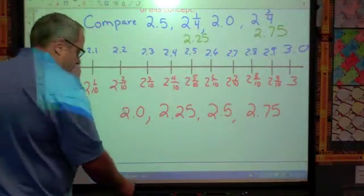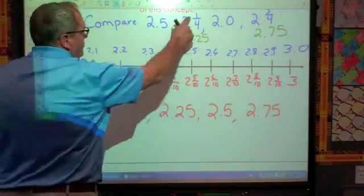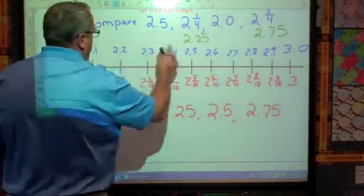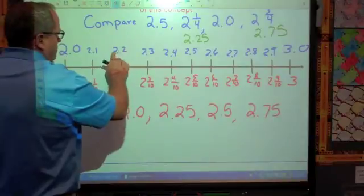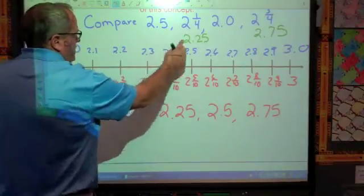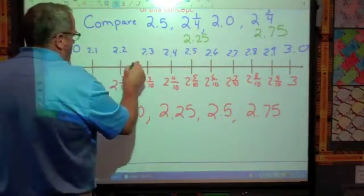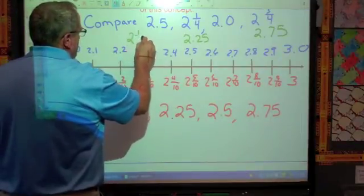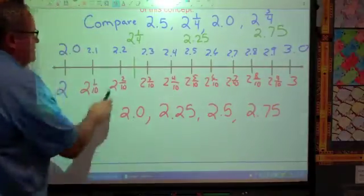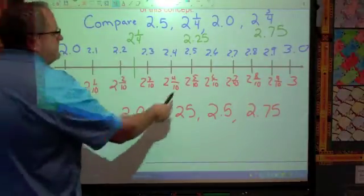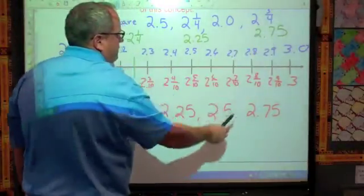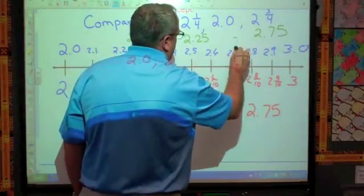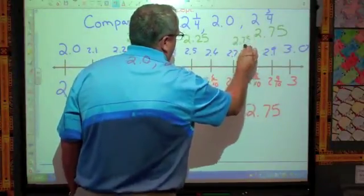Now let's talk about, just for a second, where would 2 and 1 fourth fit in this number line? Because it's 2.25. It's not 2.2 and it's not 2.3. It's 2.25. So it's going to be here in the middle. So right here in the middle would be 2 and 1 fourth because it's 2.25. Now this one down here, 2.75, it's not 2.7 and it's not 2.8. It's right here in the middle and it fits in at 2.75.